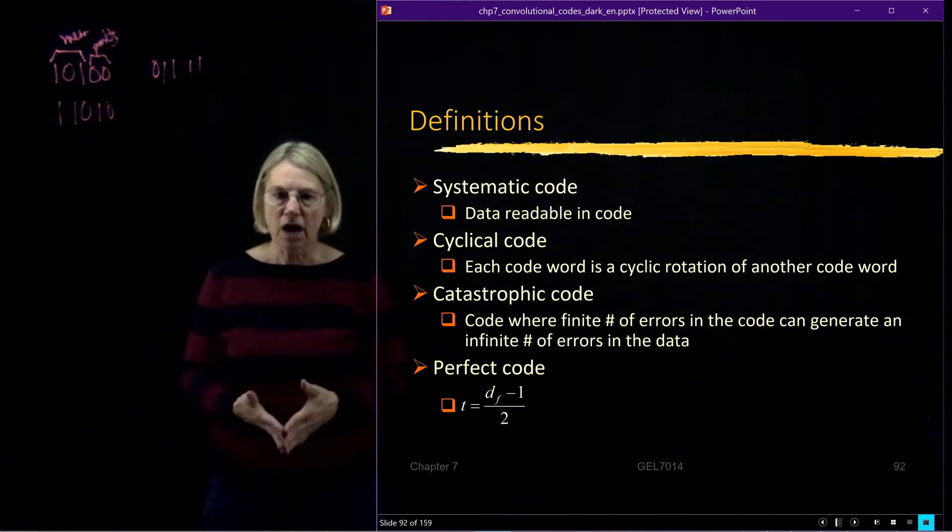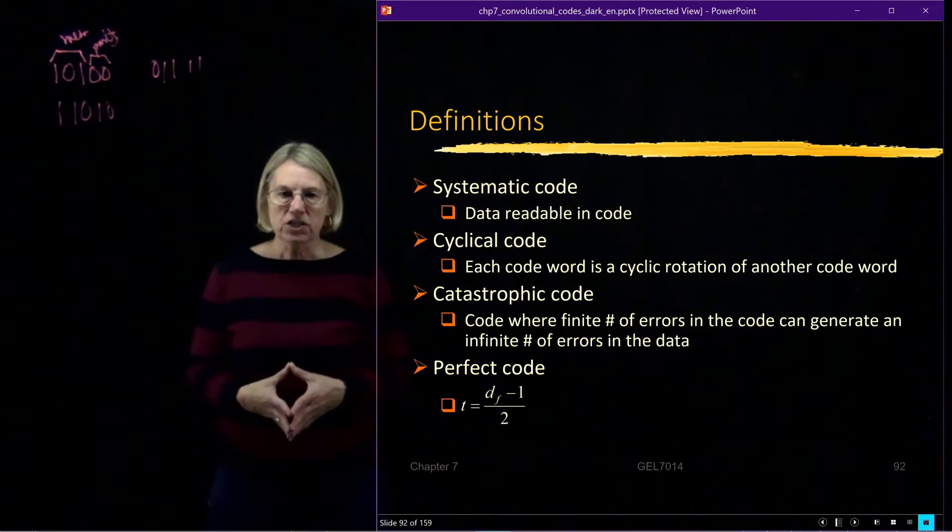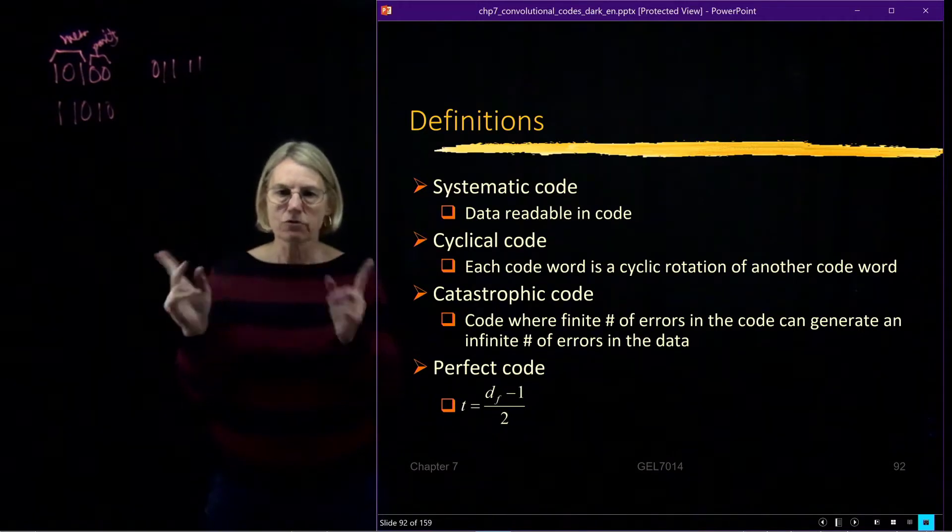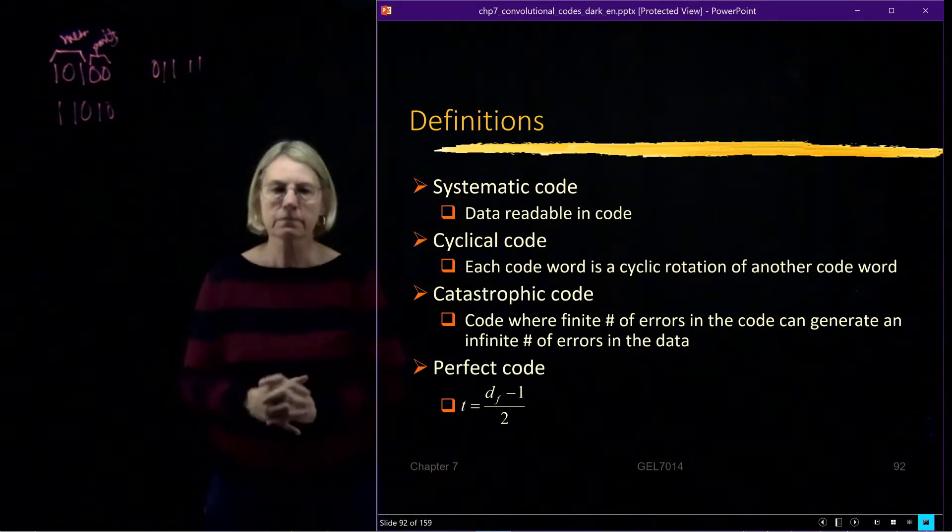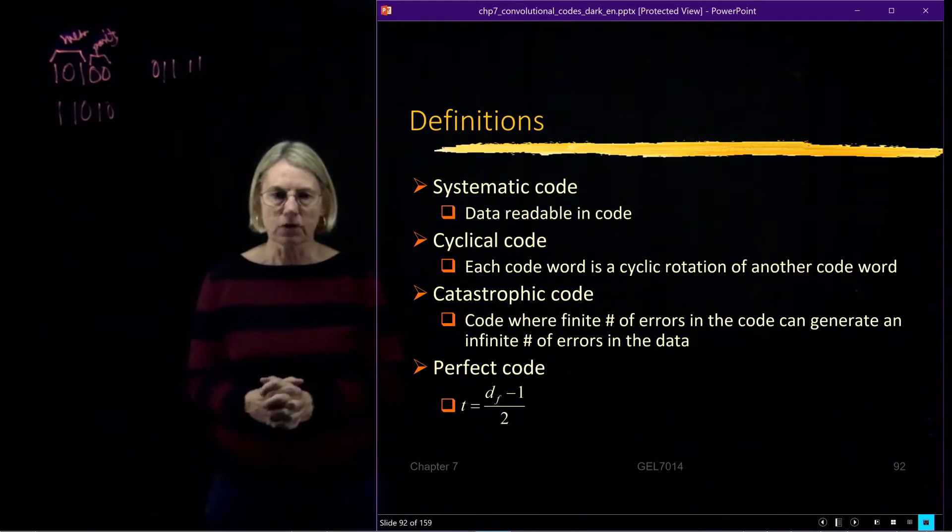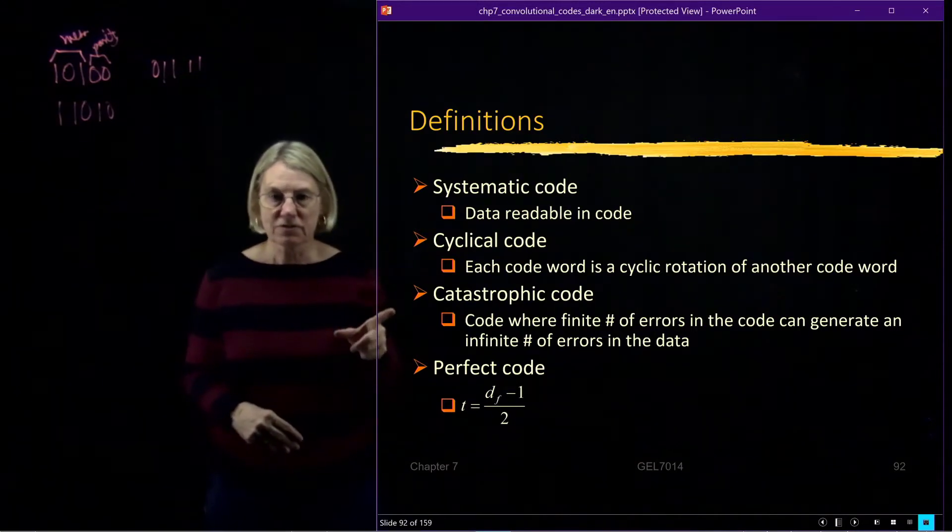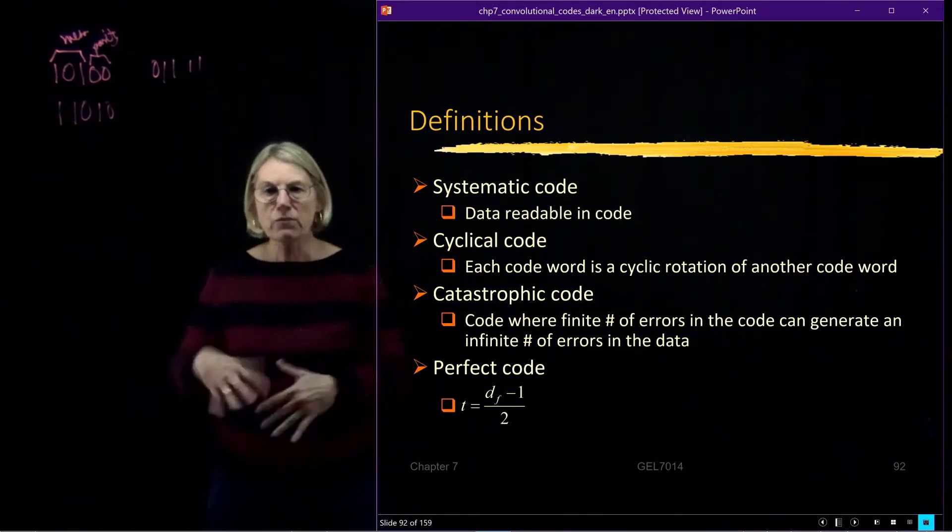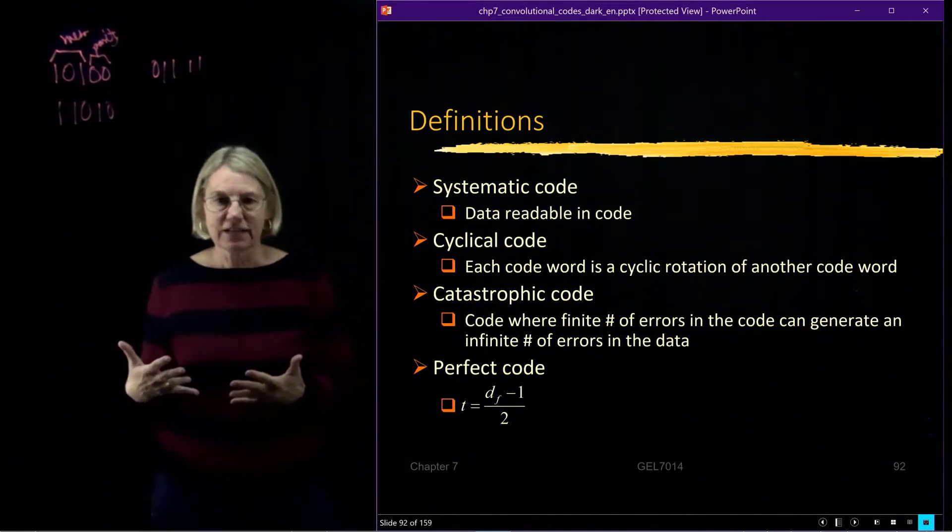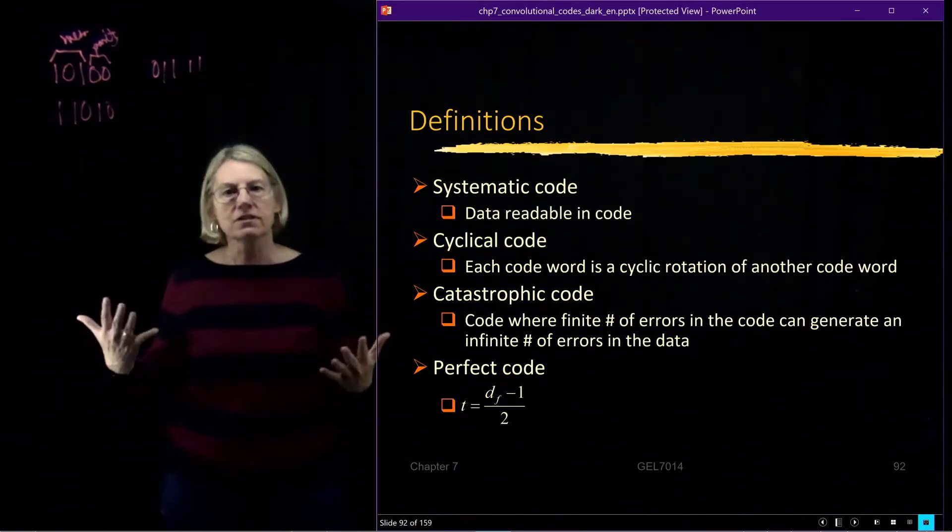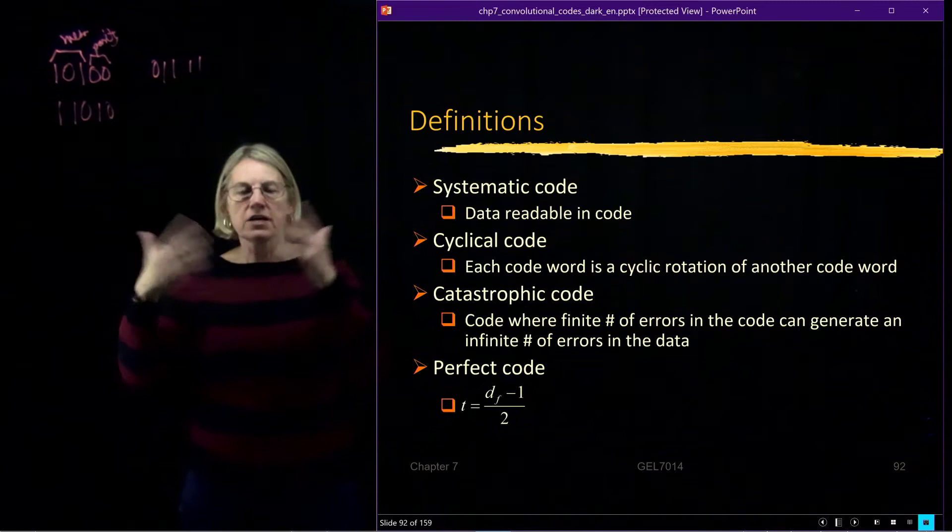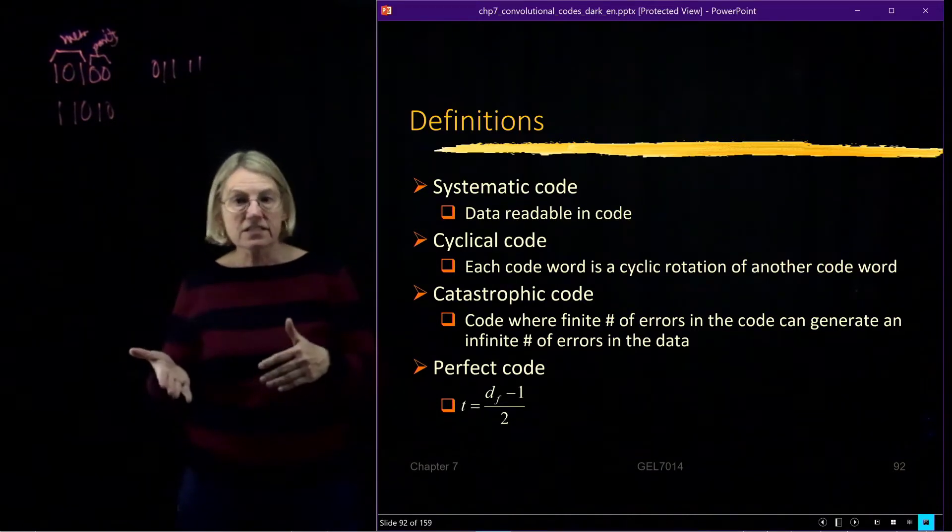Cyclical codes are codes where each word is a cyclic rotation of the other. Situations where that might be useful. Catastrophic codes. These are bad things. So when we're going through the effort of finding good codes, generating codes, trying to come up with calculating a free distance of a code,